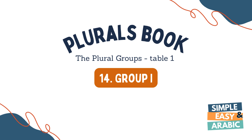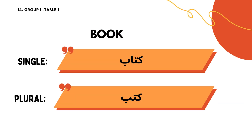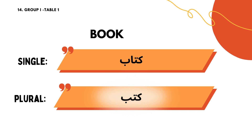Group one, table one. I will read the Arabic from right to left — right is singular, left is plural. Book: ktab, ktob.